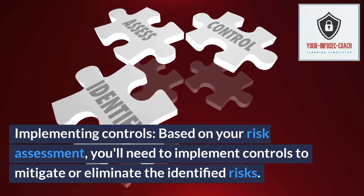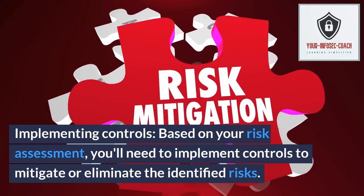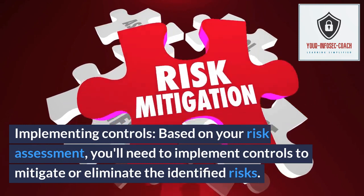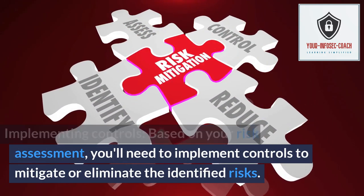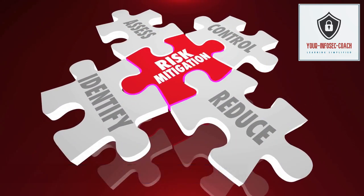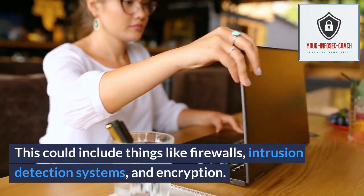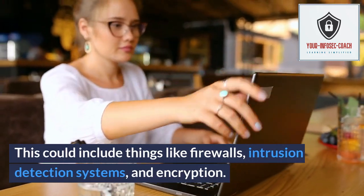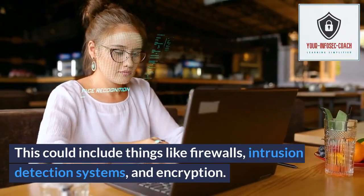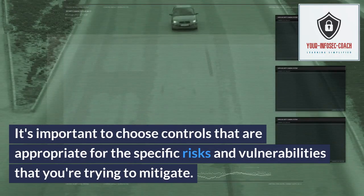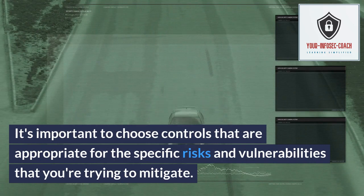You'll need to implement controls to mitigate or eliminate the identified risks. This could include things like firewalls, intrusion detection systems, and encryption. It's important to choose controls that are appropriate for the specific risks and vulnerabilities that you're trying to mitigate.